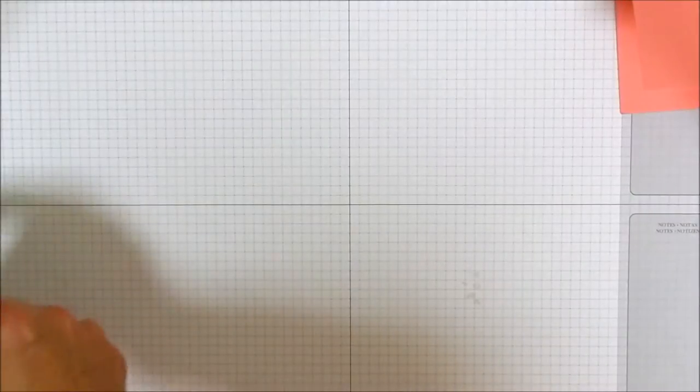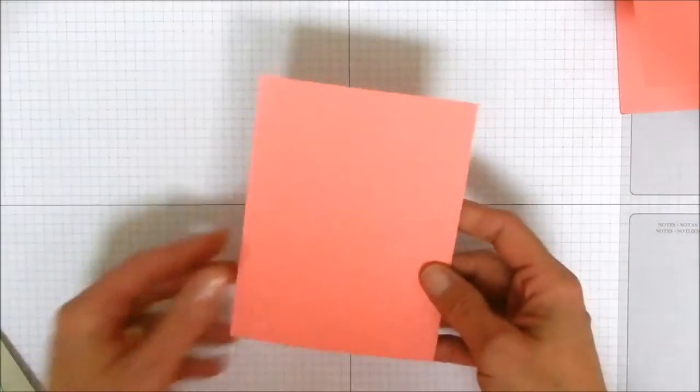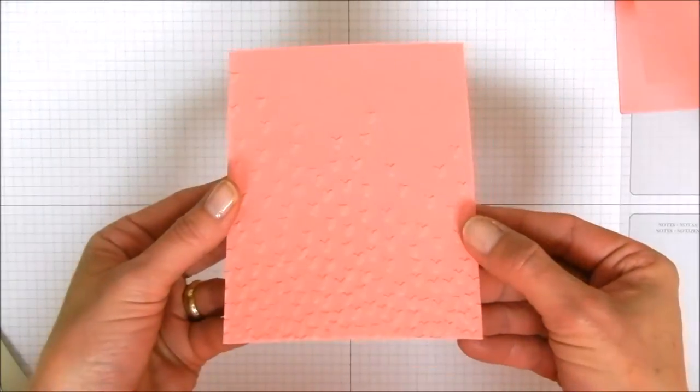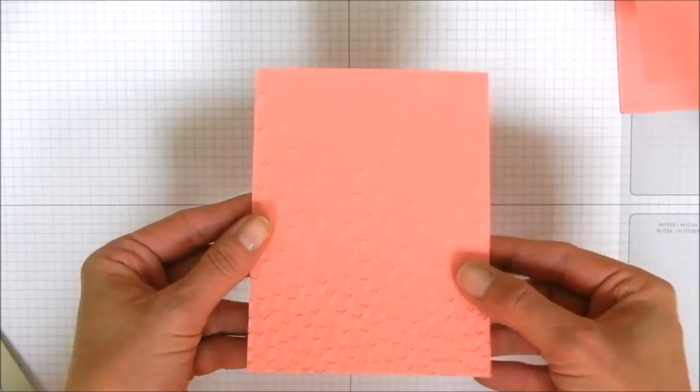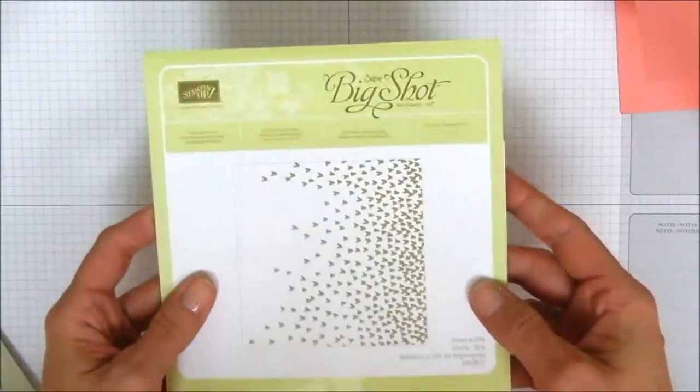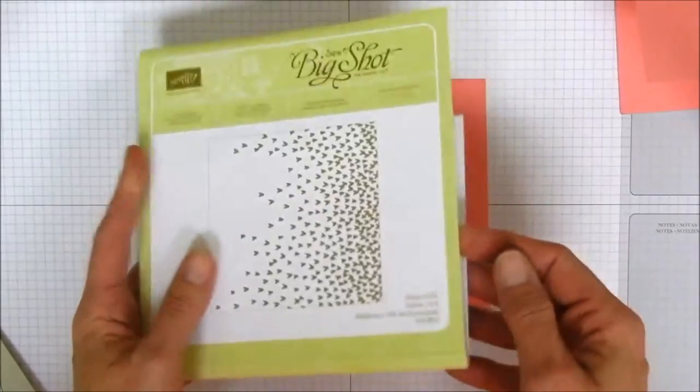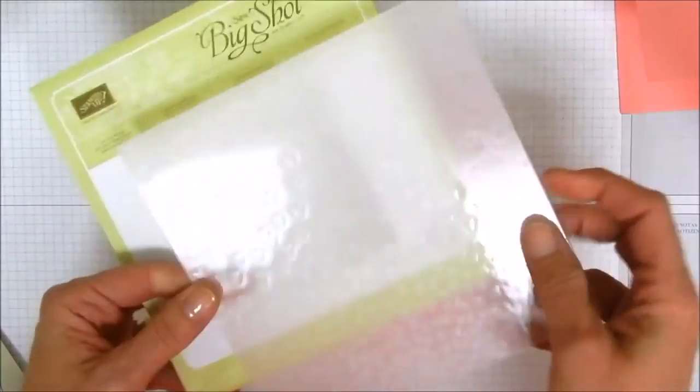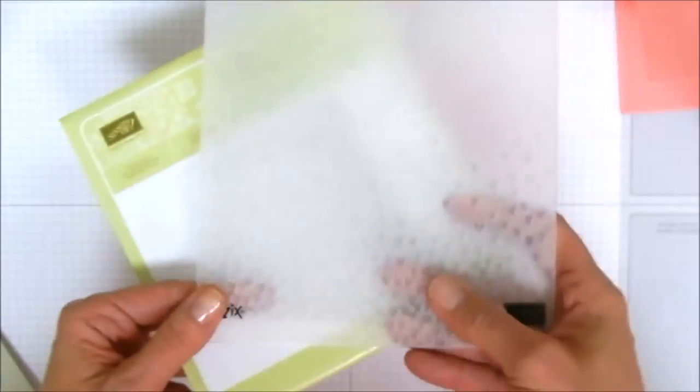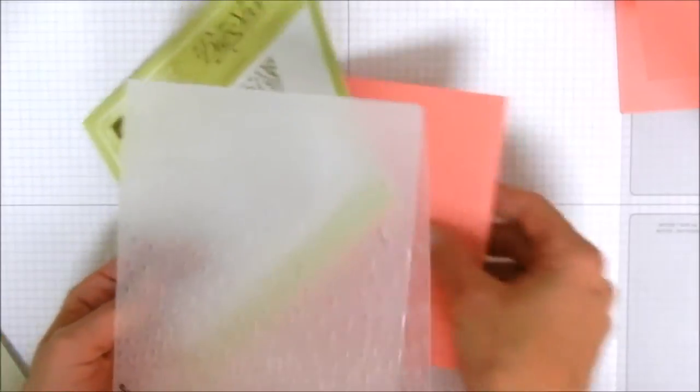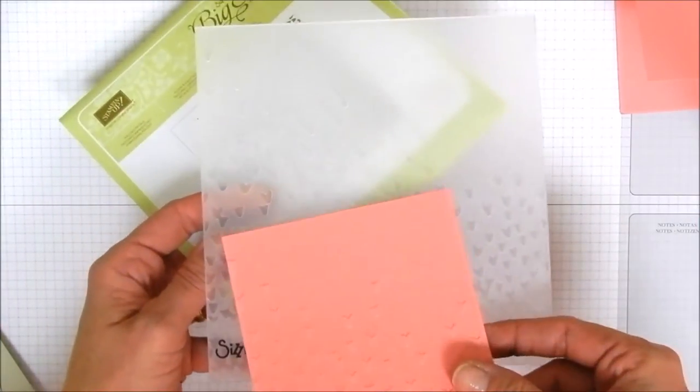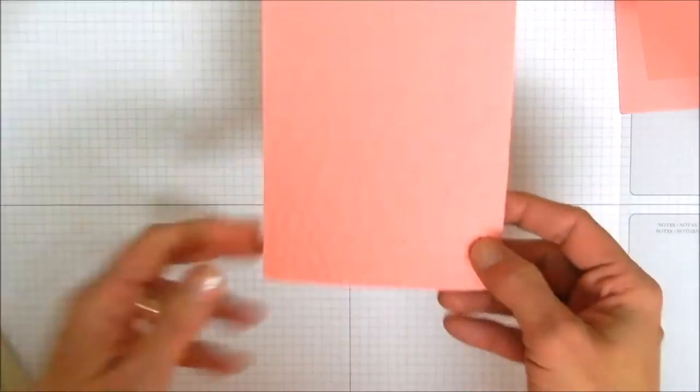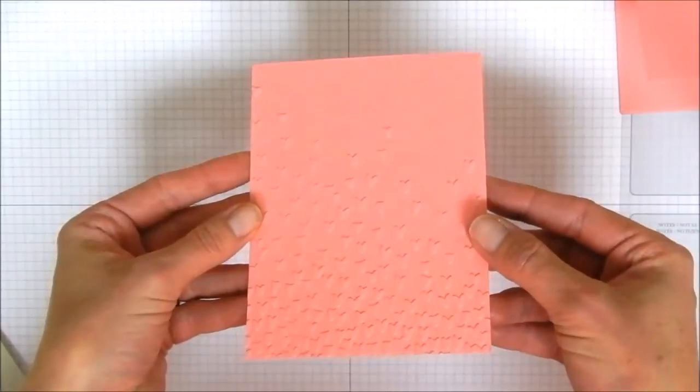Next we need another layer of flirty flamingo and this one is cut five and a quarter by four and it's textured. Can you see that? It is textured with our brand new falling petals embossing folder. This is one of our larger embossing folders but it's six inches so you can fit it through the big shot either way. And so I just put my layer of flirty flamingo inside the embossing folder, ran it through my big shot and it comes out with this beautifully raised or embossed design.